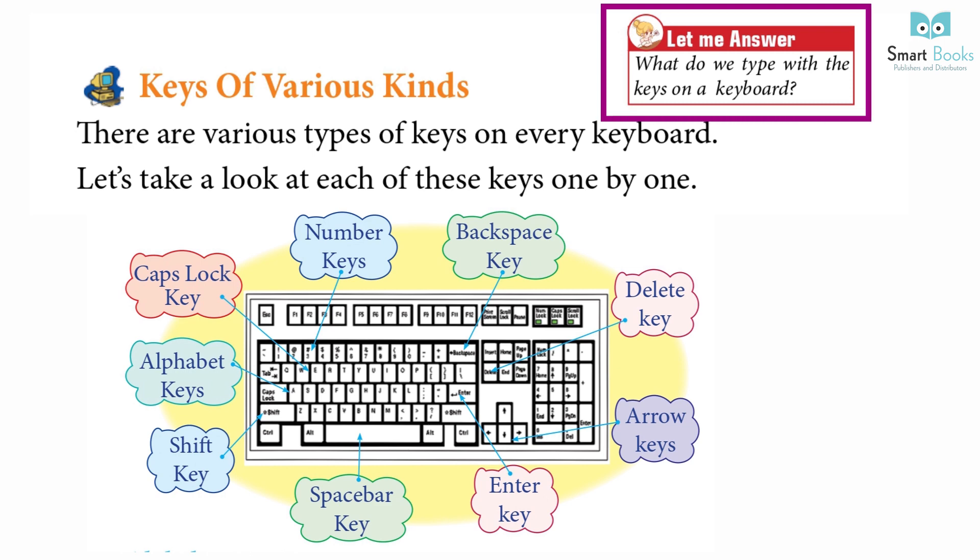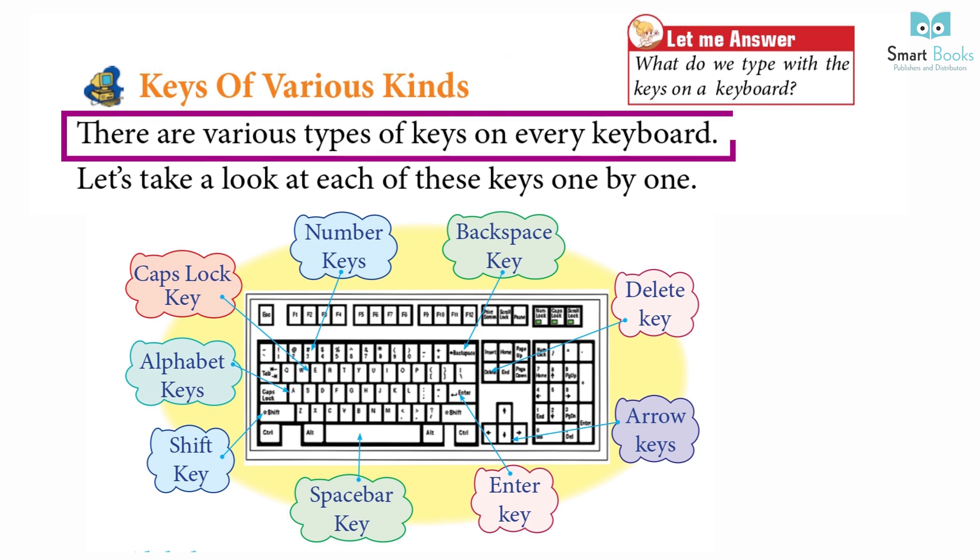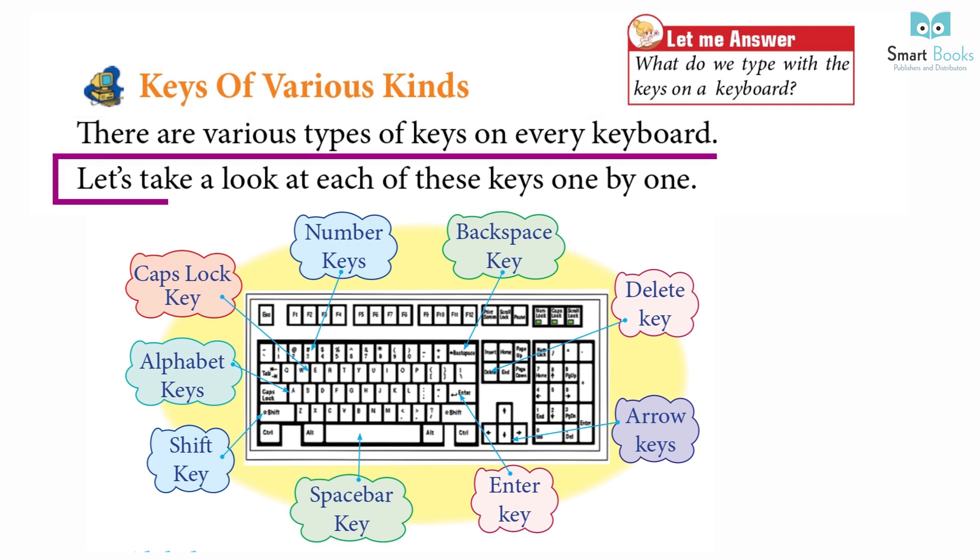Let me answer: What do we type with the keys on a keyboard? Keys of various kinds: There are various types of keys on every keyboard. Let's take a look at each of these keys one by one. Alphabet keys, Caps lock key, Number keys, Backspace key, Delete key, Arrow key, Enter key, Spacebar key, Shift key.